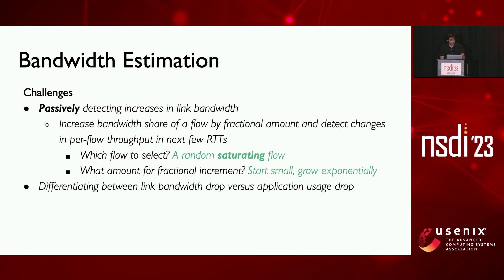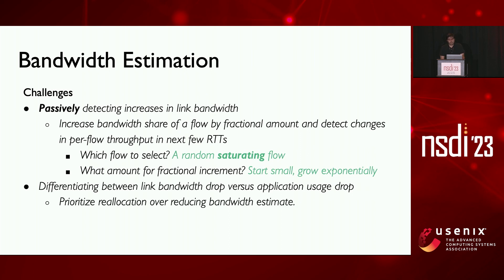So this lets us detect increases in link bandwidth. What about decreases in link bandwidth? Differentiating between a drop in link bandwidth versus a drop in a flow's demand is practically impossible. We do not want to spuriously decrease the bandwidth estimate since it takes some time to probe for more bandwidth. So we first try to reallocate, and this should help if the drop in arrival rate is due to a drop in flow demand. When reallocation does not help, we end up reducing the bandwidth estimate.